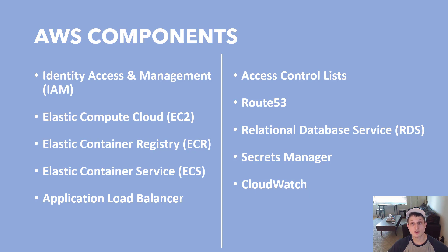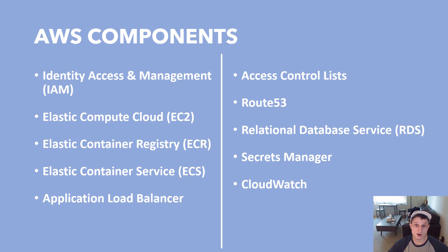Route 53 is going to allow us to select the domain name we want and attach it to our Flask application. Relational Database Service is the database on AWS we're going to connect to our Flask application — we're going to be using Postgres. Secrets Manager is AWS's solution for storing private information and private variables that you want to give restricted access to. And finally, CloudWatch is going to monitor our application and let us know immediately through an email alert if our application goes down.